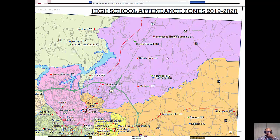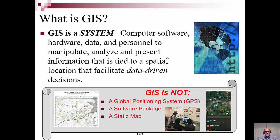When we talk about GIS, it's the computer, the software, the hardware, the data, and the personnel to manipulate, analyze, and present information that's tied to spatial location — to facilitate data-driven decisions. Now, GIS isn't a GPS; GPS is a part of GIS. It's not a typical software package — there are a number of different software packages out there, but NCCU has access to a UNC license for ESRI ArcGIS and ArcMap. And it's definitely not a static map, because the second you print that out it becomes obsolete. These days we have cloud-driven services which update data on the fly, so maps you carry around in your pocket are continuously being updated.